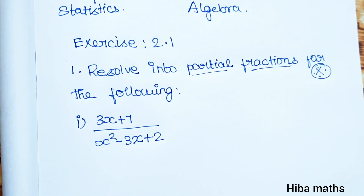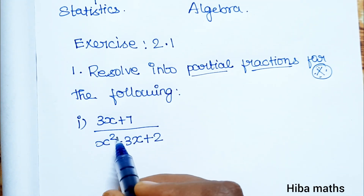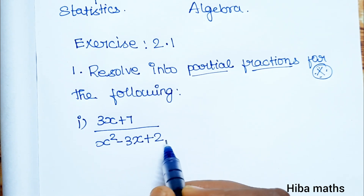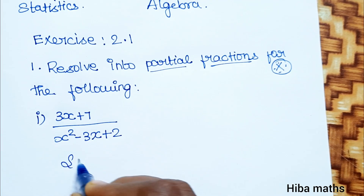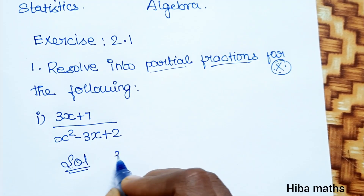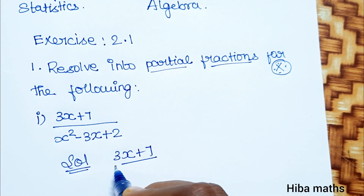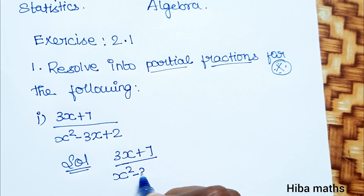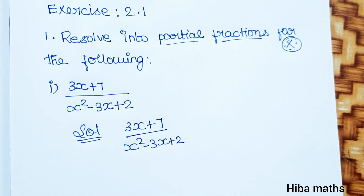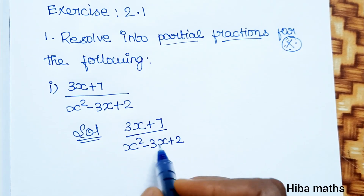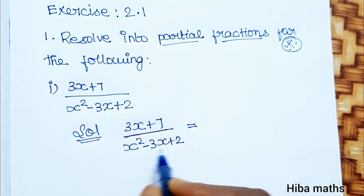Let's solve the first question: 3x plus 7 divided by x squared minus 3x plus 2. If you want to solve this sum, look at the denominator - there is only one equation, so the first step is to factor it.